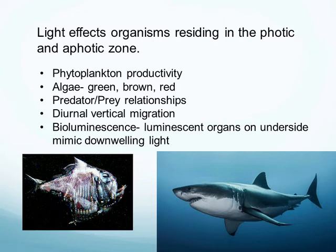Some organisms perform what's known as diurnal vertical migration — they sleep down at depth during the daytime to avoid predators that are active during the day, and at night they come back up to the surface to feed. When daylight comes back around, they go back down to sleep. Some organisms also use bioluminescence, creating their own light source generally using bacteria. You can see bioluminescence at the surface in Hawaii at certain times of the year.